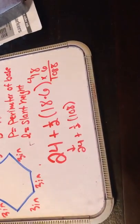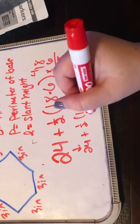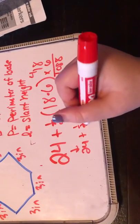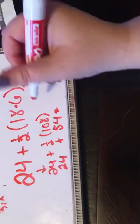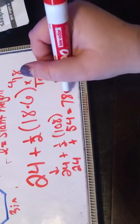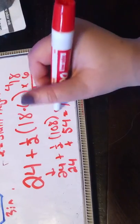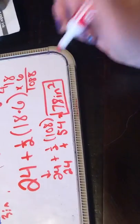So 108 times 1 half is 54, plus 24 will give you 78 inches squared. And that is how you find your answer.